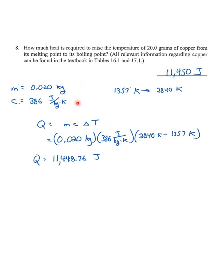We have the mass, the specific heat of copper, and we recognize the two temperatures we're going between. Plugging into Q = mcΔT, we have the mass, the specific heat, the change in temperature, that's the difference in those temperatures, and we end up with 11,450 joules.